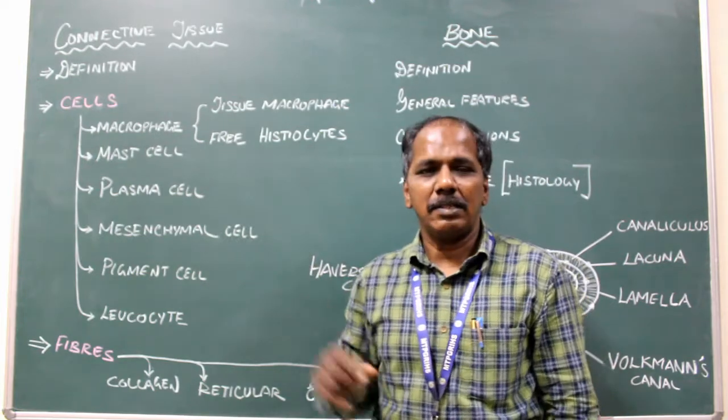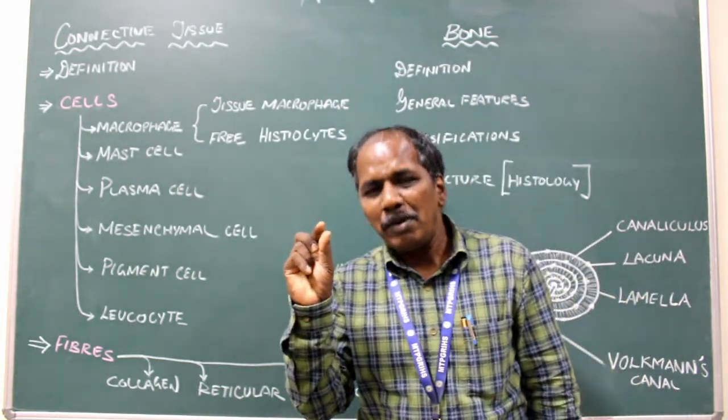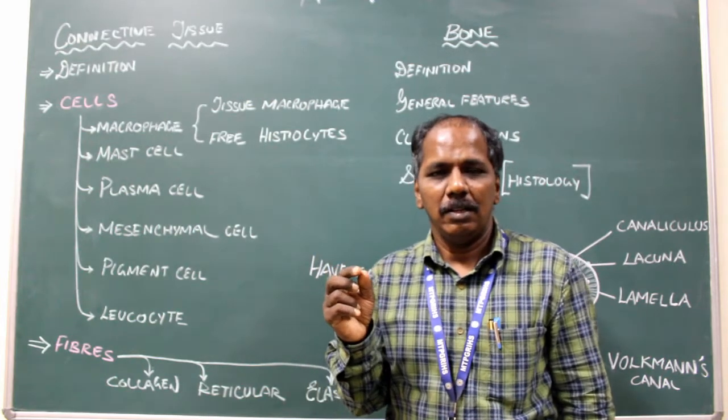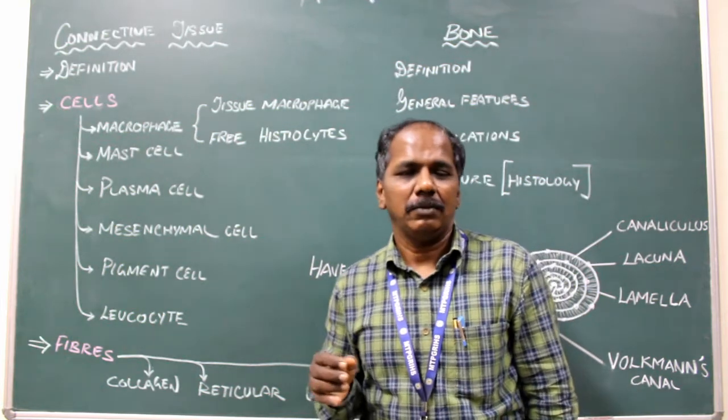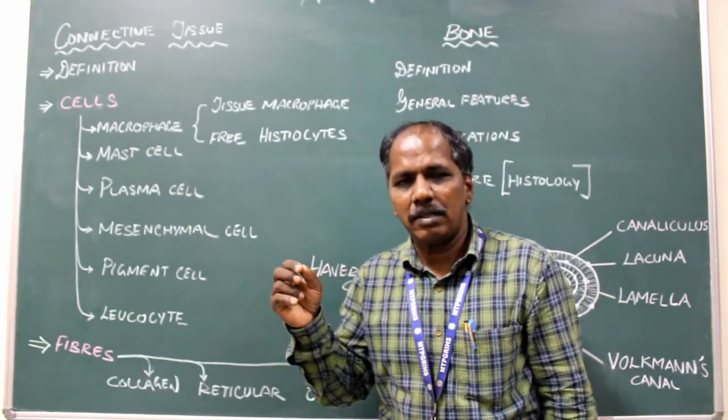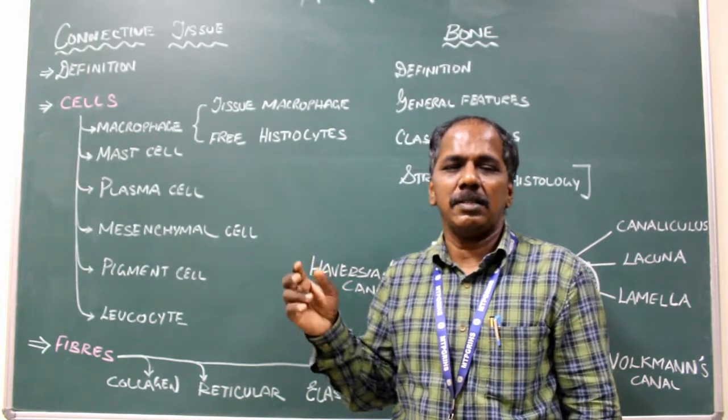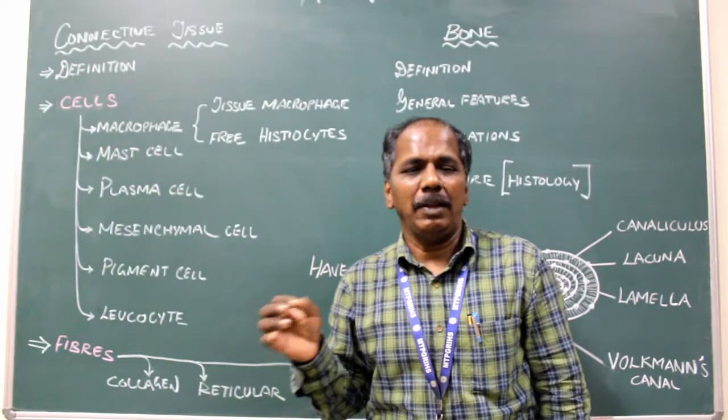Mast cell: It is a small round or oval shaped cell which secretes heparin and anticoagulant. During allergic reactions or abnormal conditions in the body, it produces serotonin and histamine.